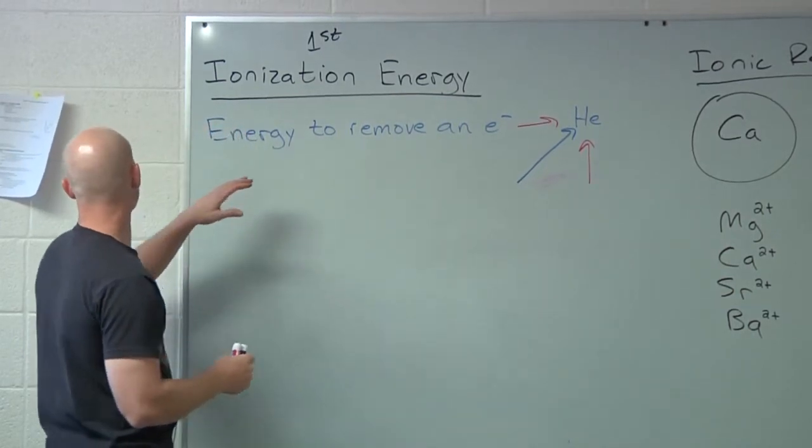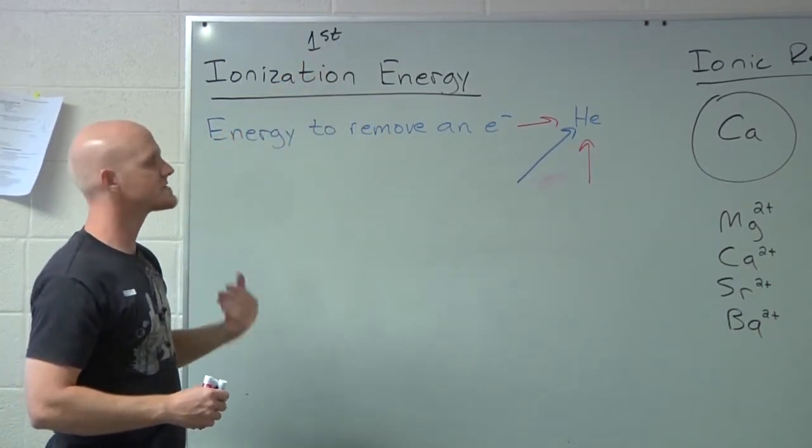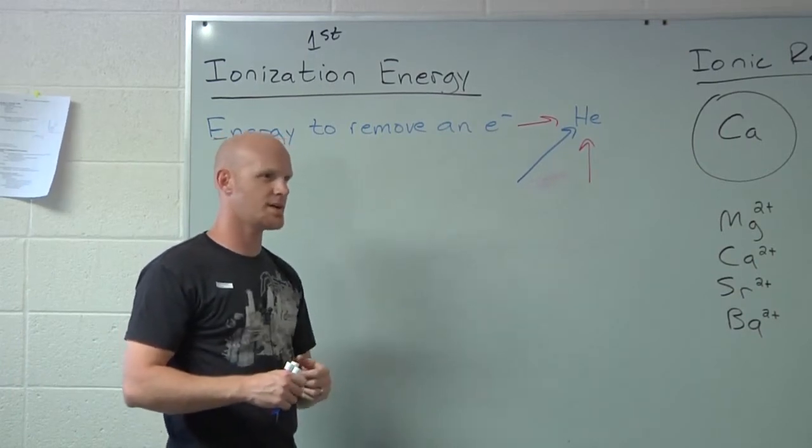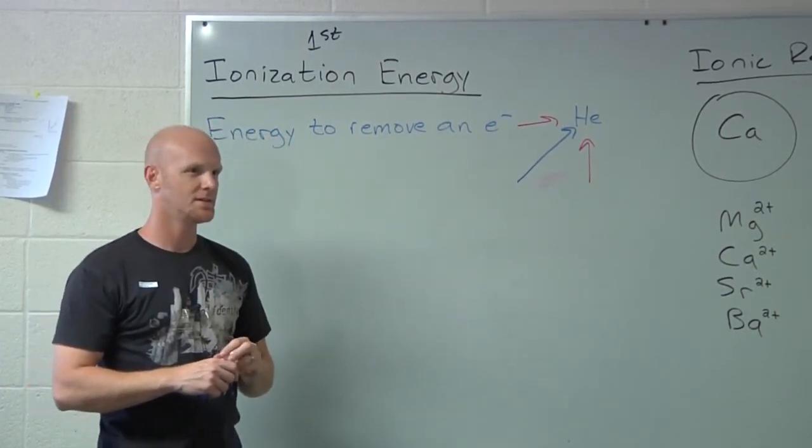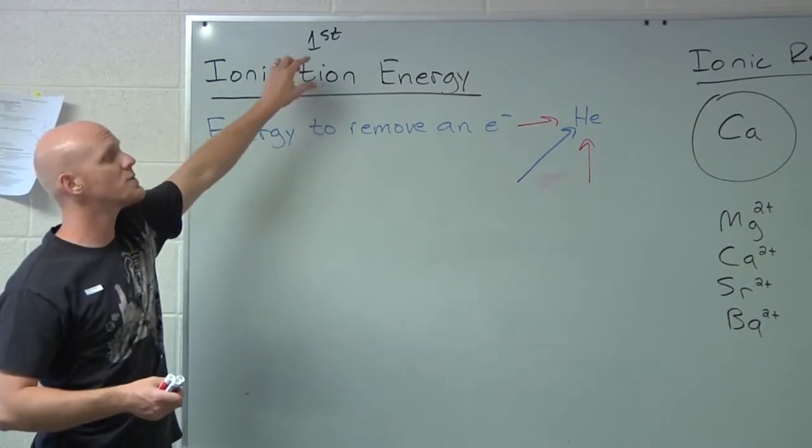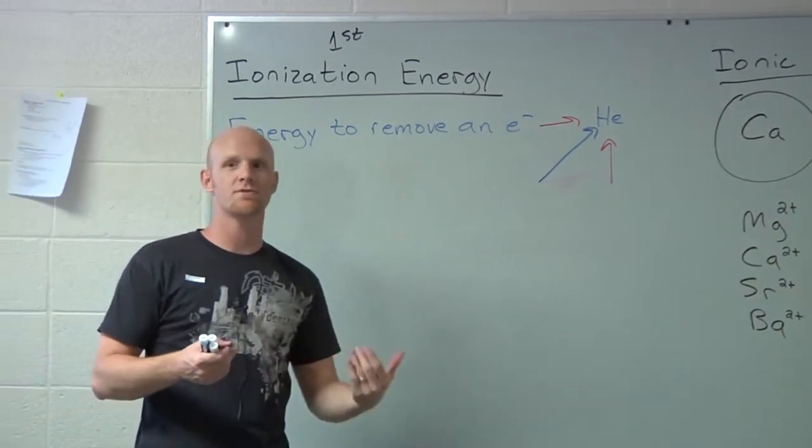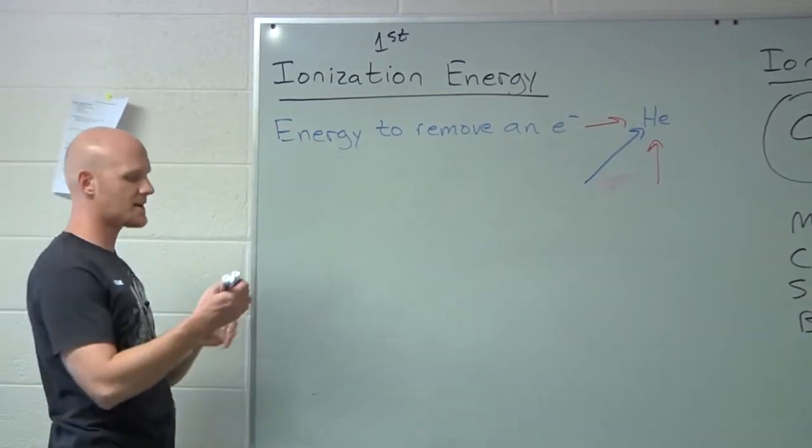We teach you this trend for the first ionization energy. If I say there's the first ionization energy, what assumption might you make? There's a second, or a third, or a fourth, and that's totally true. This is the energy to remove the first electron. But there are also trends associated with removing the second one, or the third one. We call them successive ionization energies.